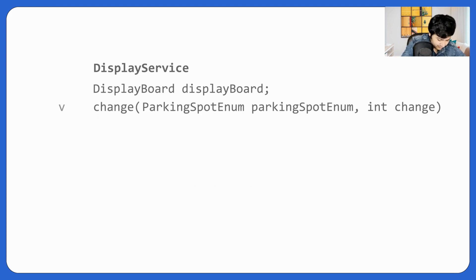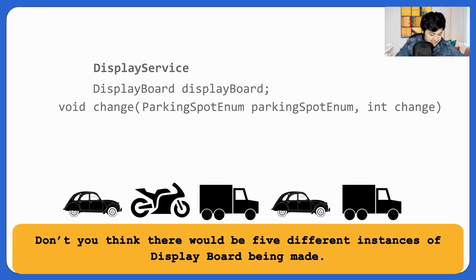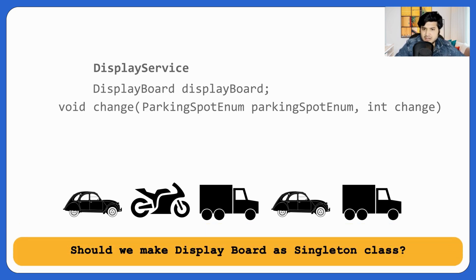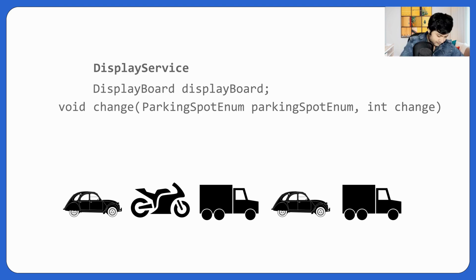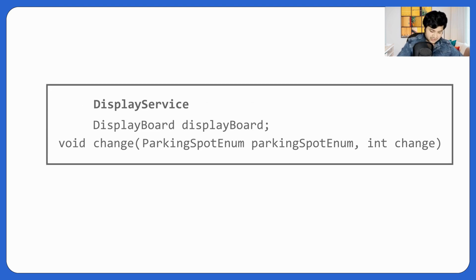The `change` method's return type can be void. Now, if five vehicles enter, the service is called five times — we don't want five different instances of display board being created. We should make display board a singleton class so that every update goes to the same display board instance. If you want to learn about singleton design pattern in depth, there's a chapter called 'logger' in fundamentals. We're done with display service.